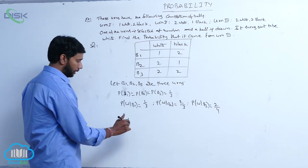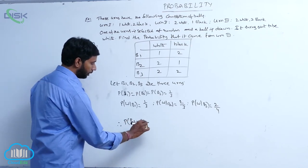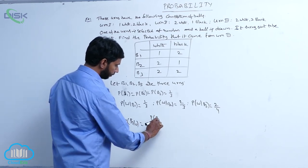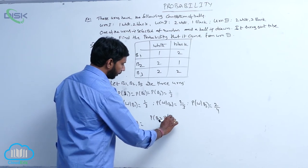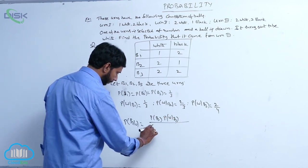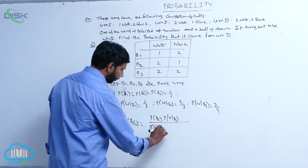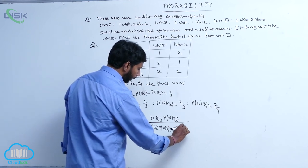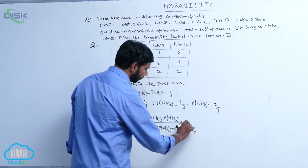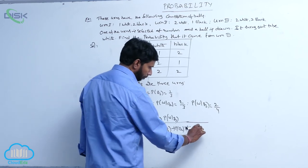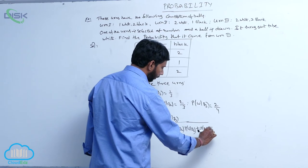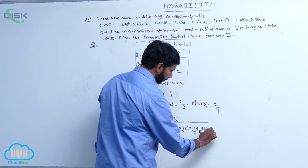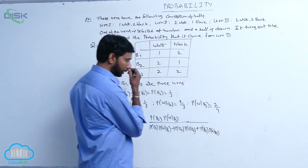The probability that the ball came from the third bag given it is white — P(B3 | W) — is equal to P(B3) times P(W | B3) divided by P(B1) times P(W | B1) plus P(B2) times P(W | B2) plus P(B3) times P(W | B3). Substitute the values.